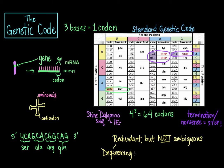For example, a codon of NAN — where N stands for any nucleotide — tends to encode average-sized hydrophilic residues, whereas NUN tends to code for amino acids that are hydrophobic. NCN generally yields amino acid residues that are small in size and moderate in hydrophobicity. These tendencies may result from the shared ancestry of the aminoacyl-tRNA synthetases related to these codons.